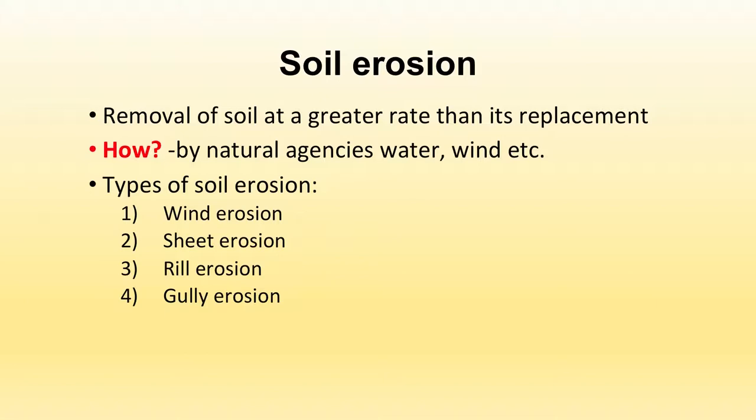Now we will deal with soil erosion. Soil erosion is basically the removal of soil at a greater rate than its replacement. Soil formation takes a very long time, so replacement is a very slow process, while erosion takes place at a very fast rate. Soil erosion occurs by natural agencies like water and wind.